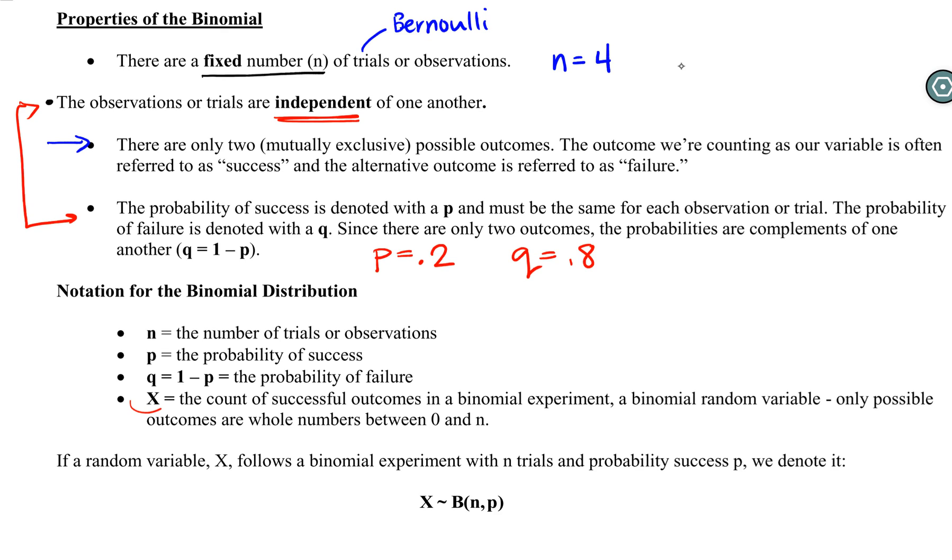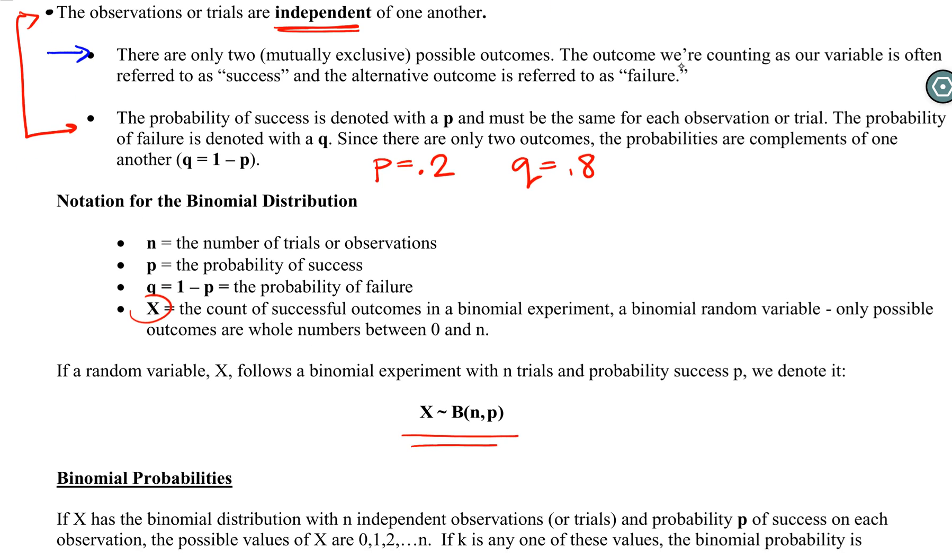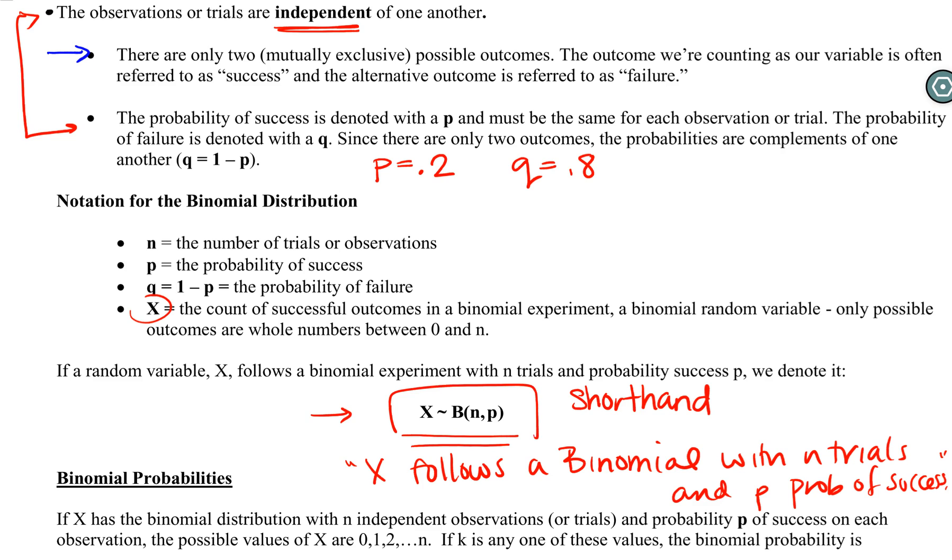And once you've got all of that we've got all the notation, everything we need for the binomial. And again we've actually seen this part before. X was the number of successes, right? The only thing new here is this squiggly line notation here at the bottom. This is just shorthand. This is shorthand for us statisticians. It tells me that X follows—this says X follows a binomial, that's what the B stands for—with n trials and P probability of success. So that's what that tells us. That's like writing a whole sentence. And we're going to see more of this notation as we move through the course and learn about more distributions.